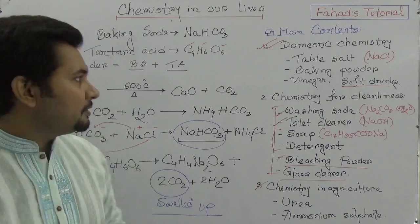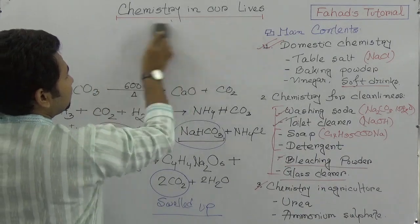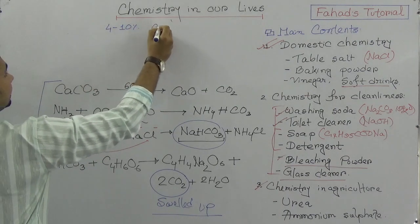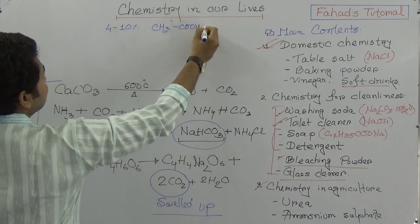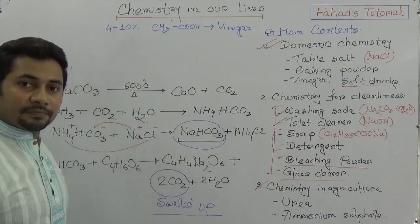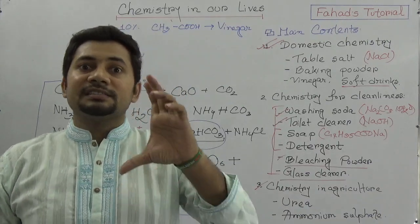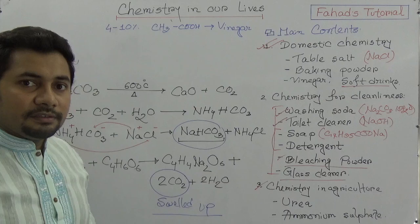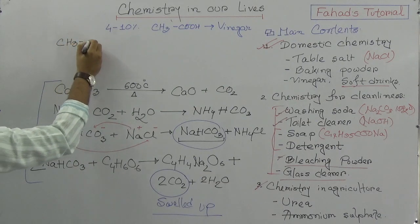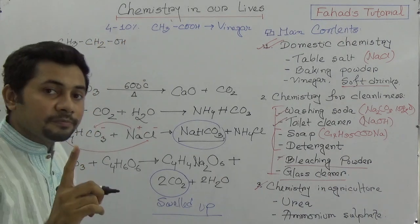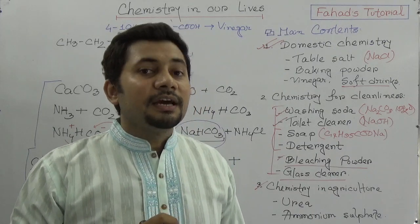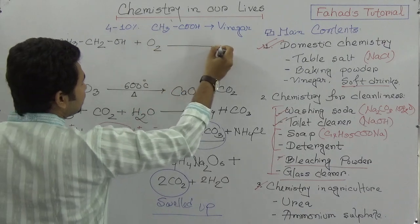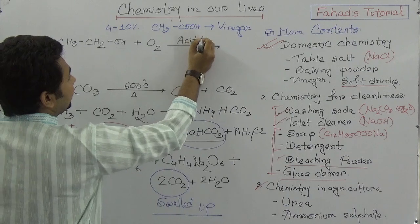Vinegar is used as a preservative. How is it produced? It is produced from ethanol. When ethanol is oxidized with the presence of Acetobacter at a temperature of 25 to 35 degrees Celsius, it produces CH₃COOH — and this is vinegar.